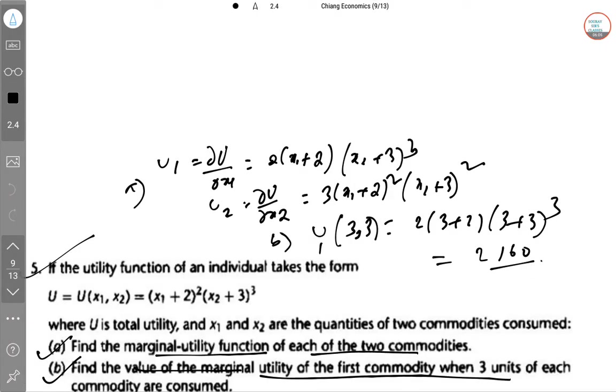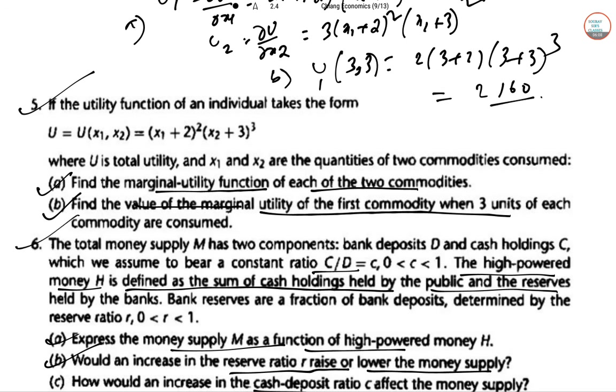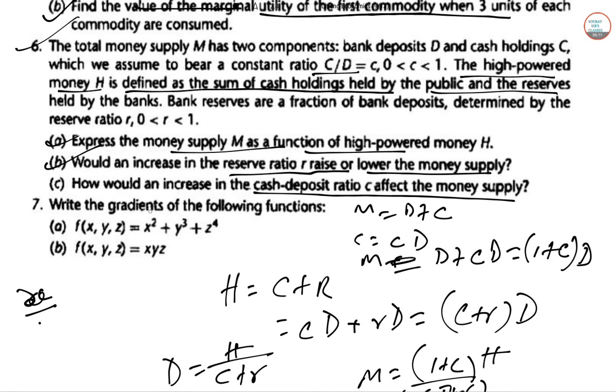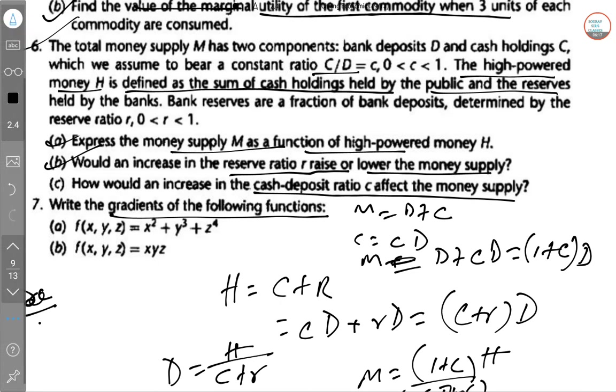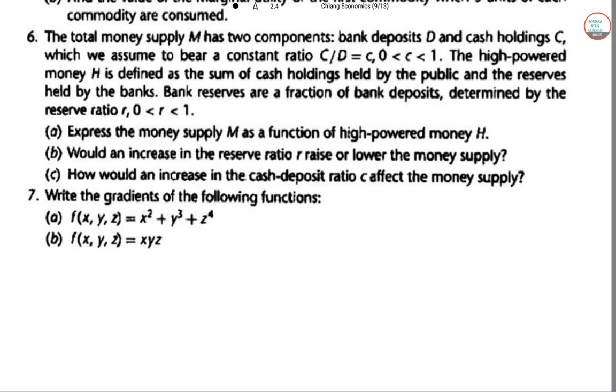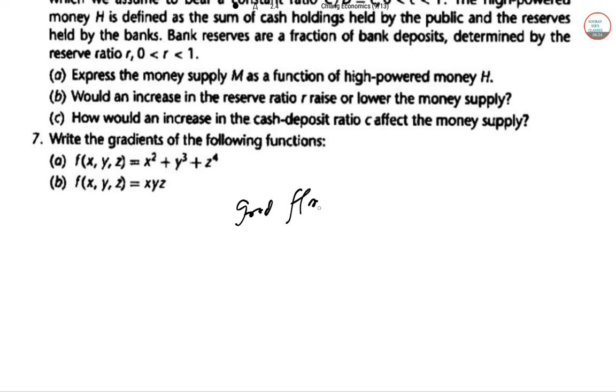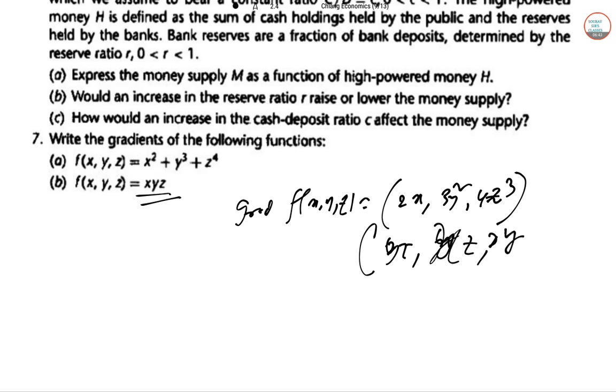Next, the last question of this chapter, so number seven. Write down the gradients of the function. So gradient is nothing but you have to differentiate. Okay, let me just clear the page. So for gradient, grad F of XYZ is nothing but, so this is the first derivative of 2x, 3y squared, and 4z cubed. Very similarly, the other two parts. This is yz, xy, yxz, and xy. So grad of XYZ also we can write it in this way.